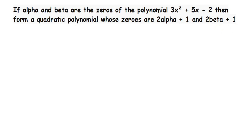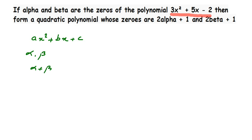The polynomial given is 3x squared plus 5x minus 2. To understand better, we take a general polynomial ax squared plus bx plus c, where a, b, and c are the coefficients. If alpha and beta are the zeros of the polynomial, then sum of the zeros — alpha plus beta — equals minus b by a, and product of the zeros — alpha into beta — equals c by a.